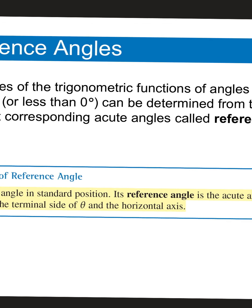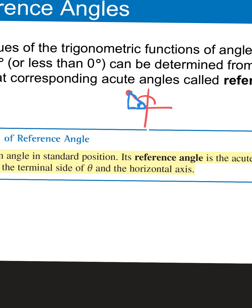Today we're going to talk about reference angles. The values of trig functions of angles greater than 90 or less than 0 can be determined from their corresponding acute angles called reference angles. We talked about this yesterday — you had a picture of an angle in the second quadrant, and I showed you how we could find trig functions using x, y, and r, but you can also find them by forming a reference angle. Everything on our unit circle is related to right triangle trig, and this kind of brings it all together.